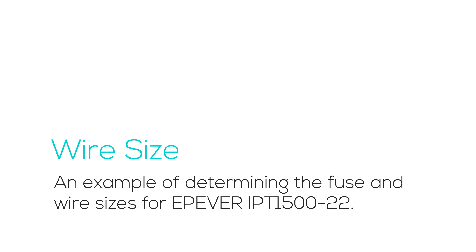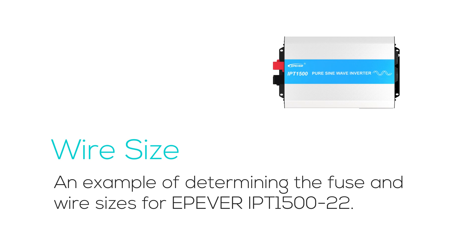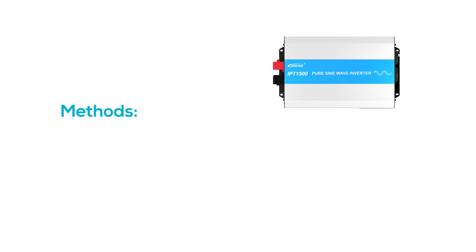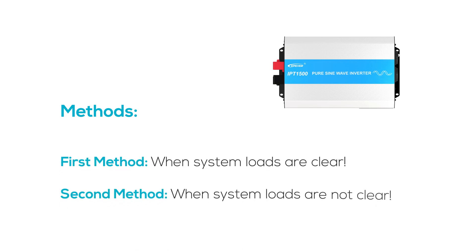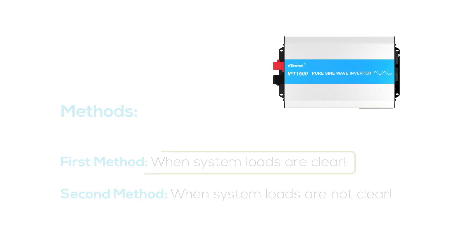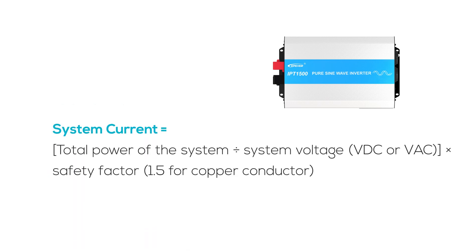In this segment we determine the wire and fuse sizes for a system with the IPT 1522. Two methods are proposed depending on whether load details are known. First method — when load details are known — there's a formula for system current calculation: sum the power ratings of all devices running simultaneously and divide by the system voltage.